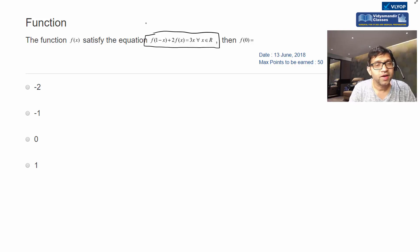If you haven't done it, then you can't do the question. So this functional equation is given: f(1-x) + 2f(x) = 3x.